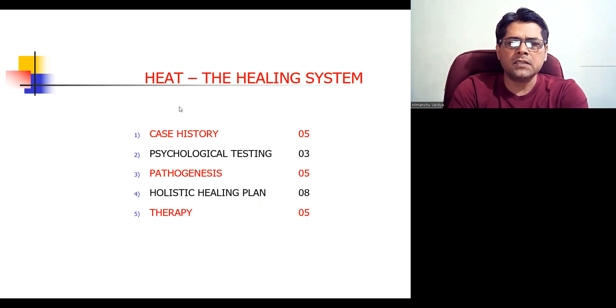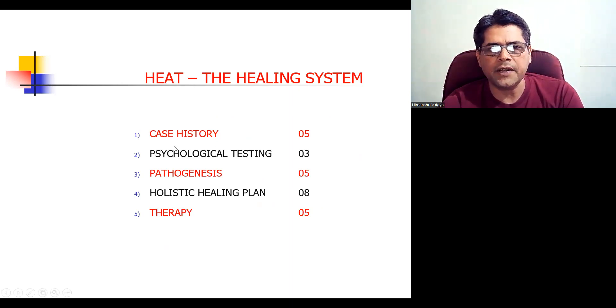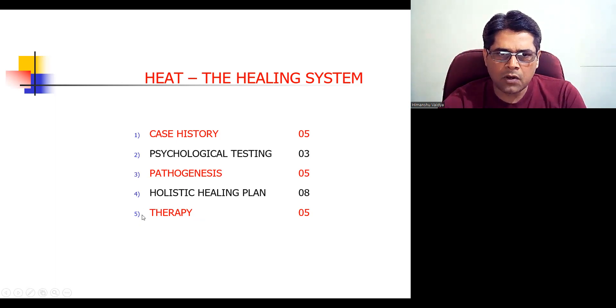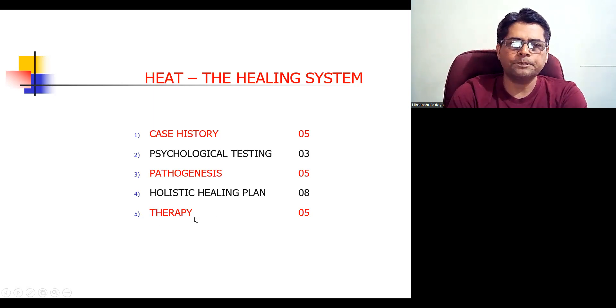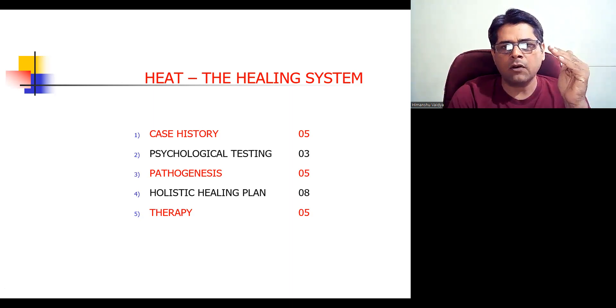How do you practice the HEAT system? The HEAT system is divided into five parts. First is case history taking, which is slightly different from the way you take case history in the conventional sense. Second is psychological testing, which also is slightly different. Third is pathogenesis. It's a very holistic and elemental pathogenesis. Then developing the holistic healing plan. And as a part of this holistic healing plan, one element of this is therapy. So these are the five parts of HEAT from a healing standpoint.